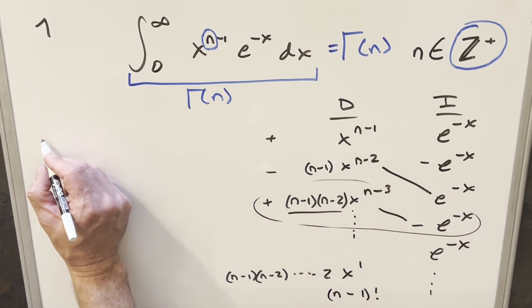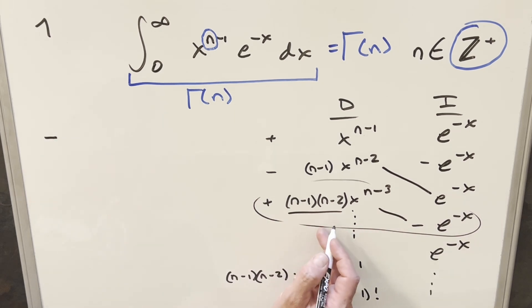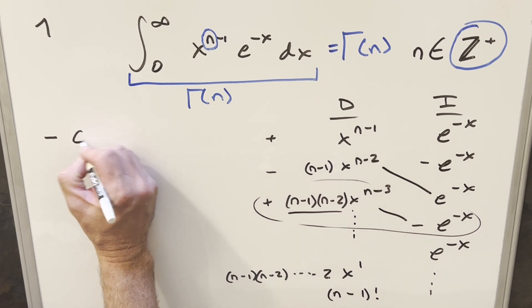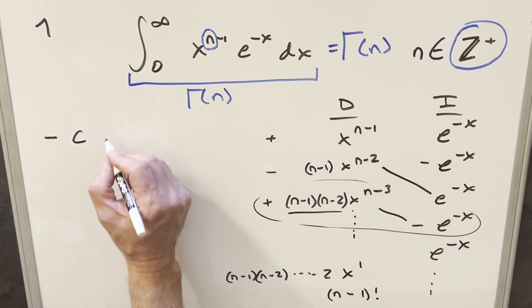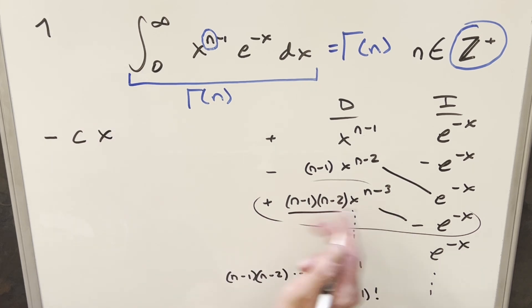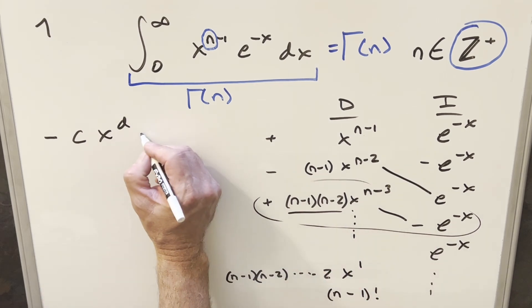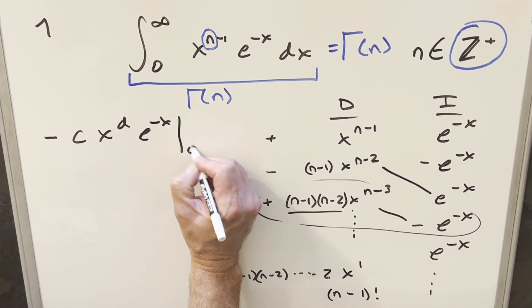So it's always going to be minus that we're evaluating. We're going to have some constant value, all these n values up front for each of these, so we'll call that a c. And then we'll have x to some exponent d, another numeric value. And then we're just going to have this times e to the minus x, and we're evaluating this from 0 to infinity.